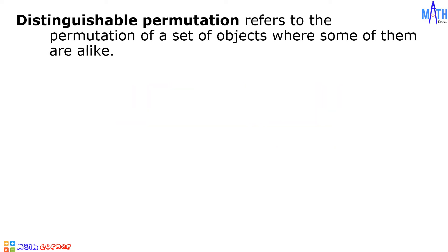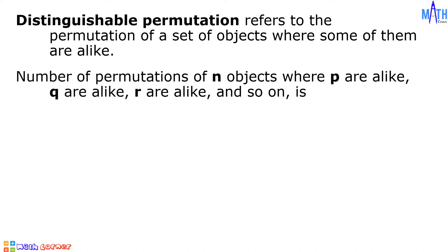Distinguishable permutation refers to the permutation of a set of objects where some of them are alike. The number of permutations of n objects where p are alike, q are alike, r are alike, and so on, is given by the formula: n factorial over p factorial times q factorial times r factorial and so on. Let us have some examples.